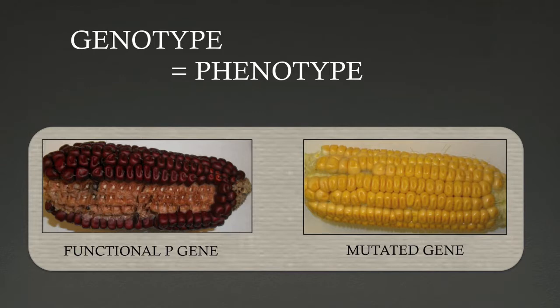In previous modules, we have shown you that changes in the genetic code of an organism affecting its genotype can have direct and sometimes drastic effects on the physical attributes or phenotype of the organism. For example, corn with a mutated copy of the pea gene loses its color and starts looking more like the yellow corn we buy in stores today.